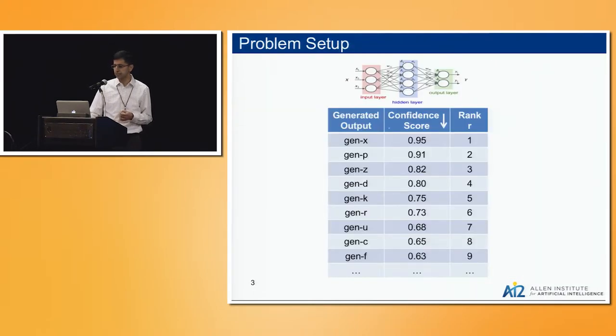Here's a bit more formal setup. You are given a model, some black box that produces some output. For our purposes, we'll write it as gen x, gen p, gen z, and so on. We don't necessarily care what that is, except the annotator might care.